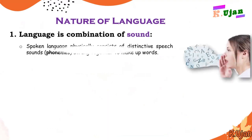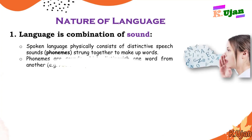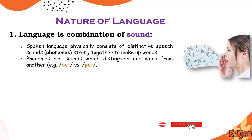Sound is basically the nature of language. Spoken language physically consists of distinctive speech sounds. Phonemes are strung together to make up words, so all the phonemes are actually units of the sound system of a language. For example, phonemes are sounds which distinguish one word from another — such as 'bat' versus 'pet', which differ only in the sounds /b/ and /p/. These are known as phonemes.